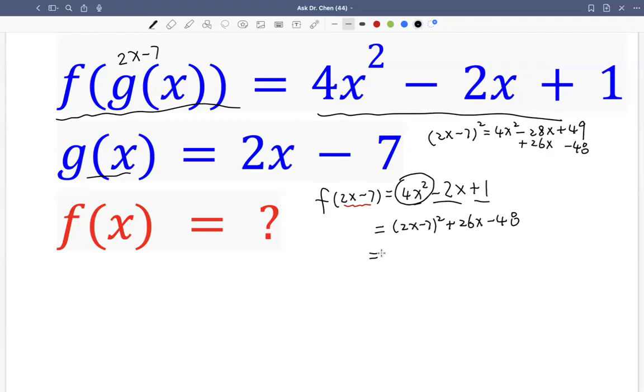So okay, the quadratic term is done. So we have 2x minus 7 squared, right? That's corresponding to that.